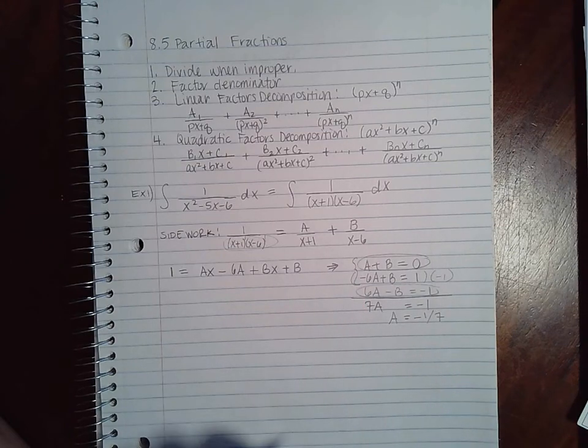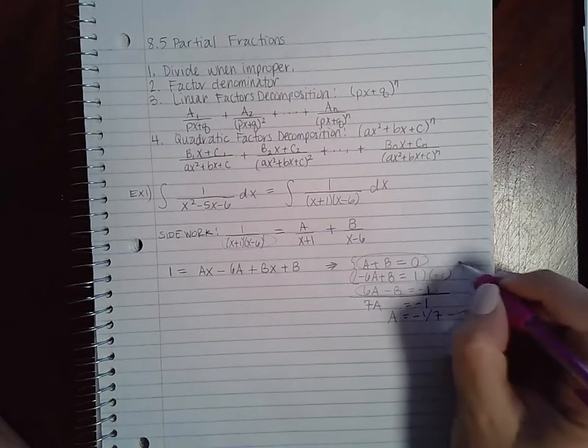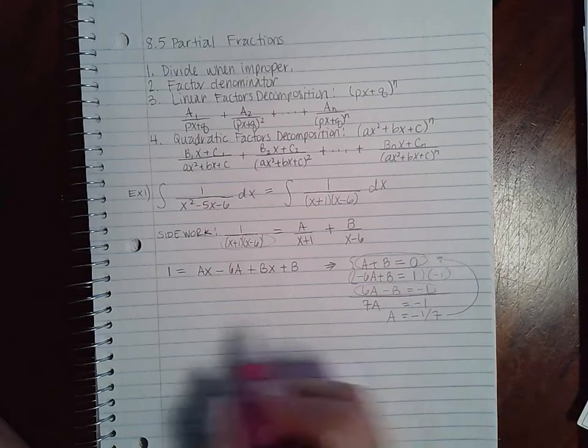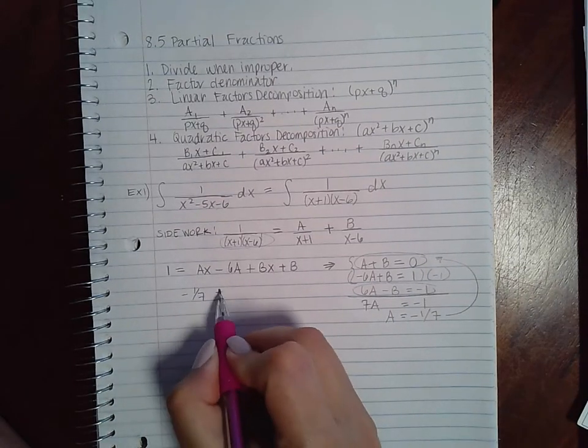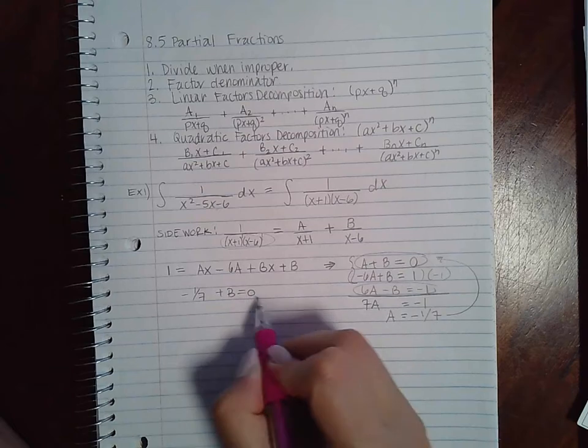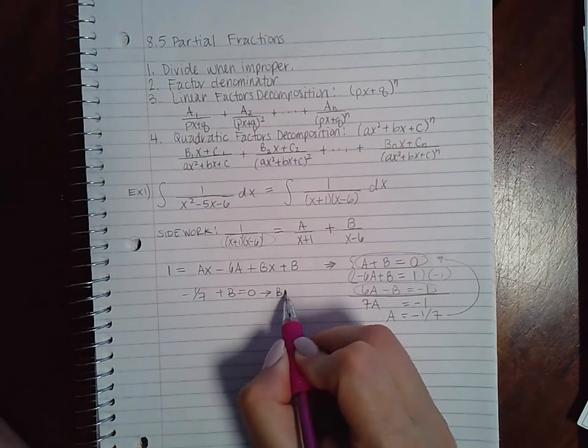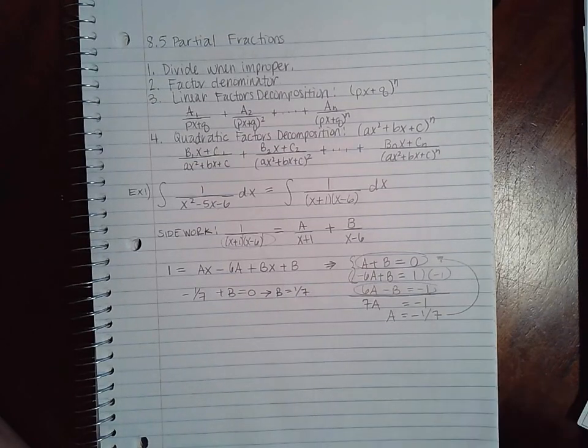Once I have one variable's value, I can substitute that into either one of the original equations in the system. I'm going to choose to plug it into this top equation. So what I get is negative one seventh plus b equals zero. Well, that would mean that b would have to be positive one seventh if I'm going to get zero.